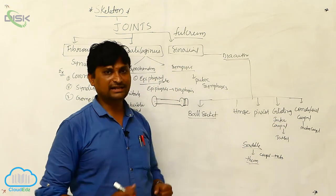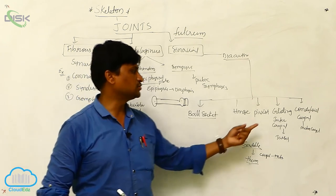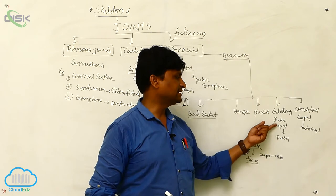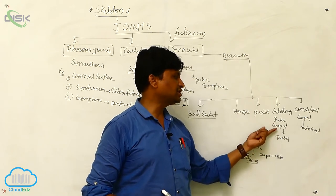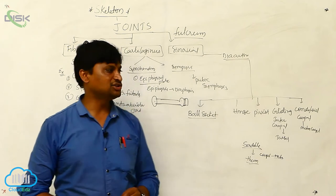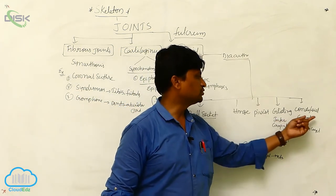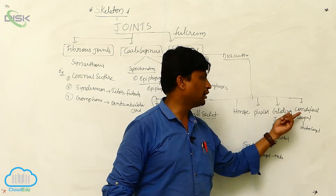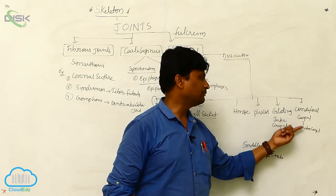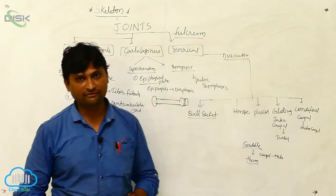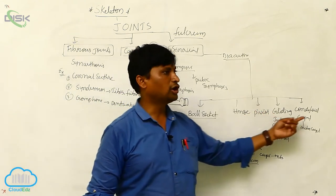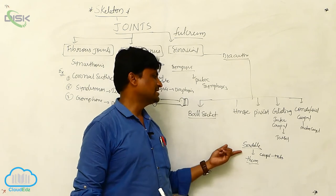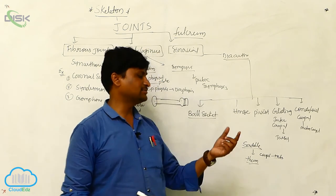Gliding joints are found at the intercarpal and tarsal bones — between these bones the joint is called a gliding joint. Next is the condyloid joint, found between the carpal and metacarpal bones. The joint between carpals and metacarpals is called a condyloid joint.